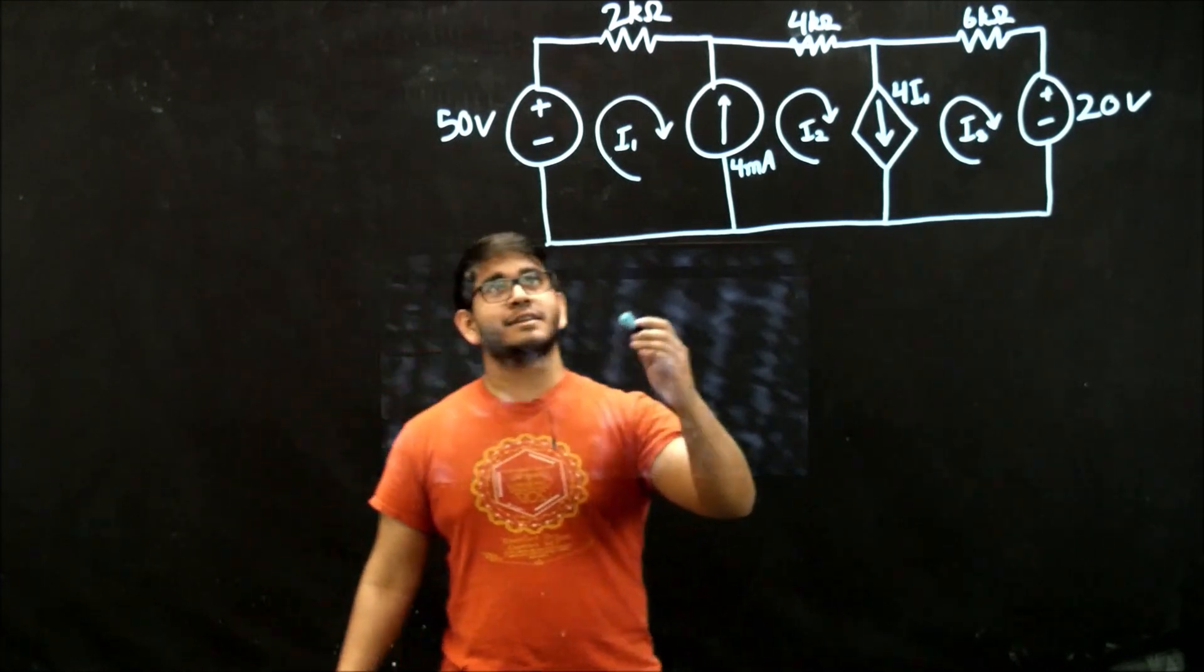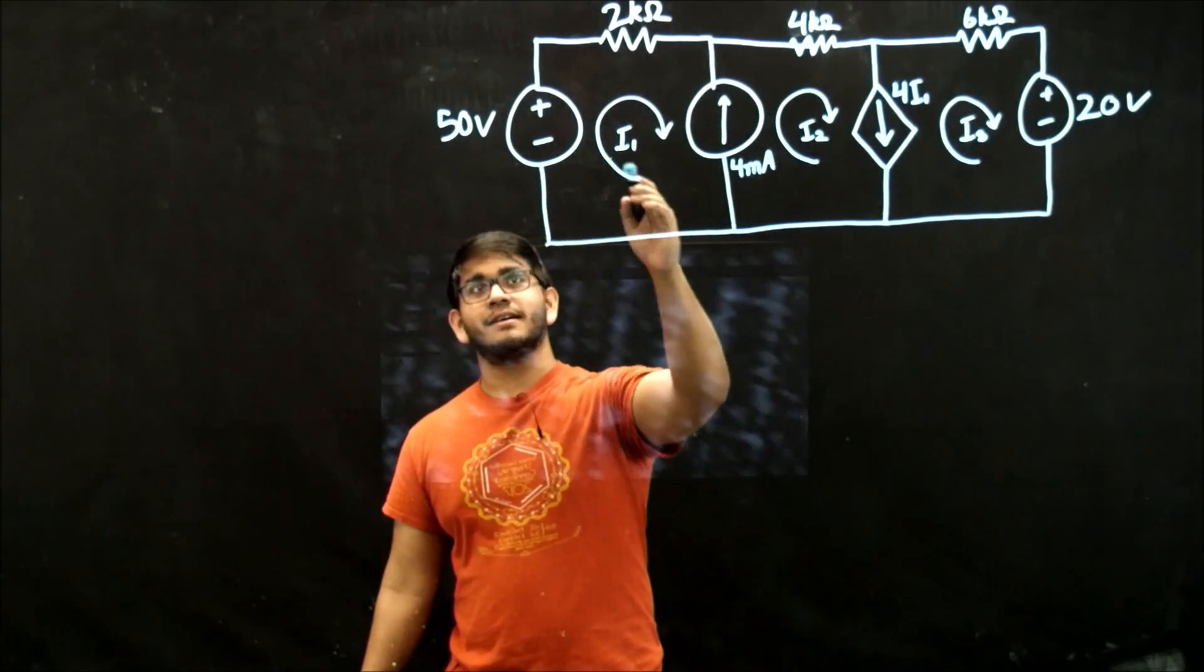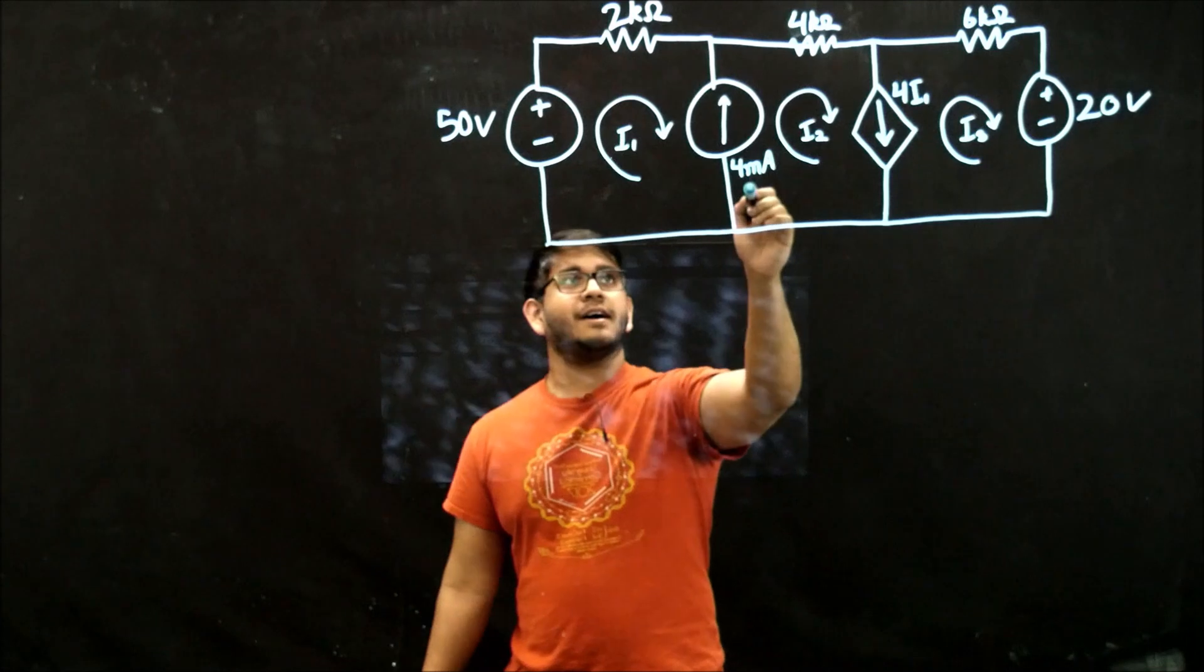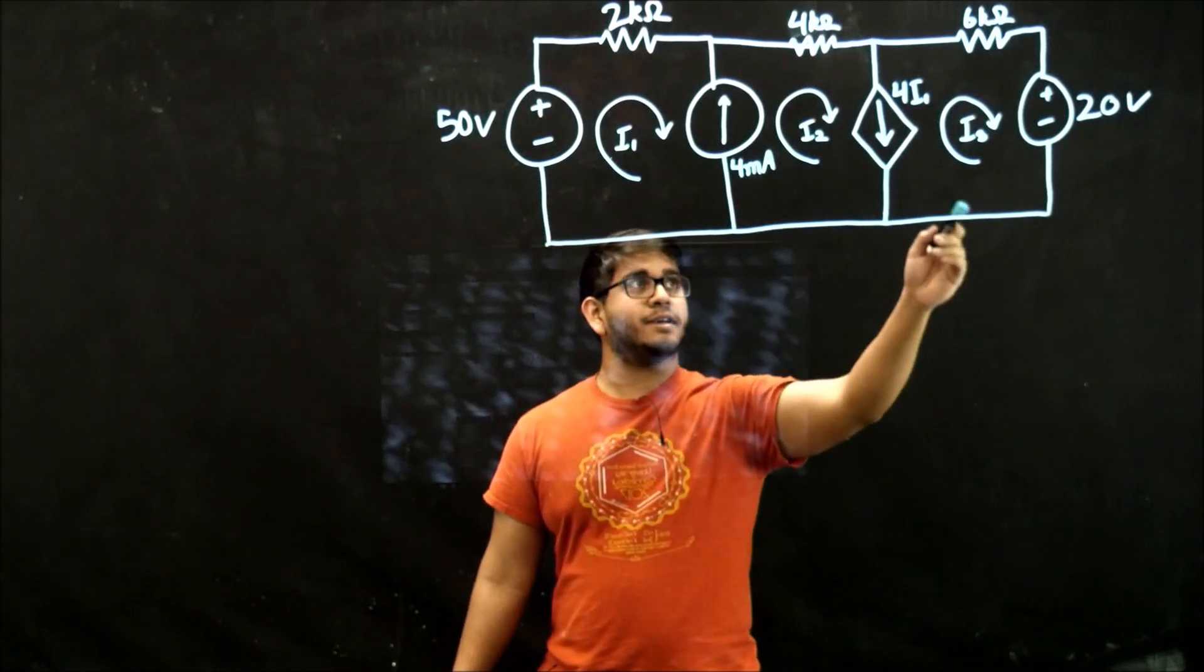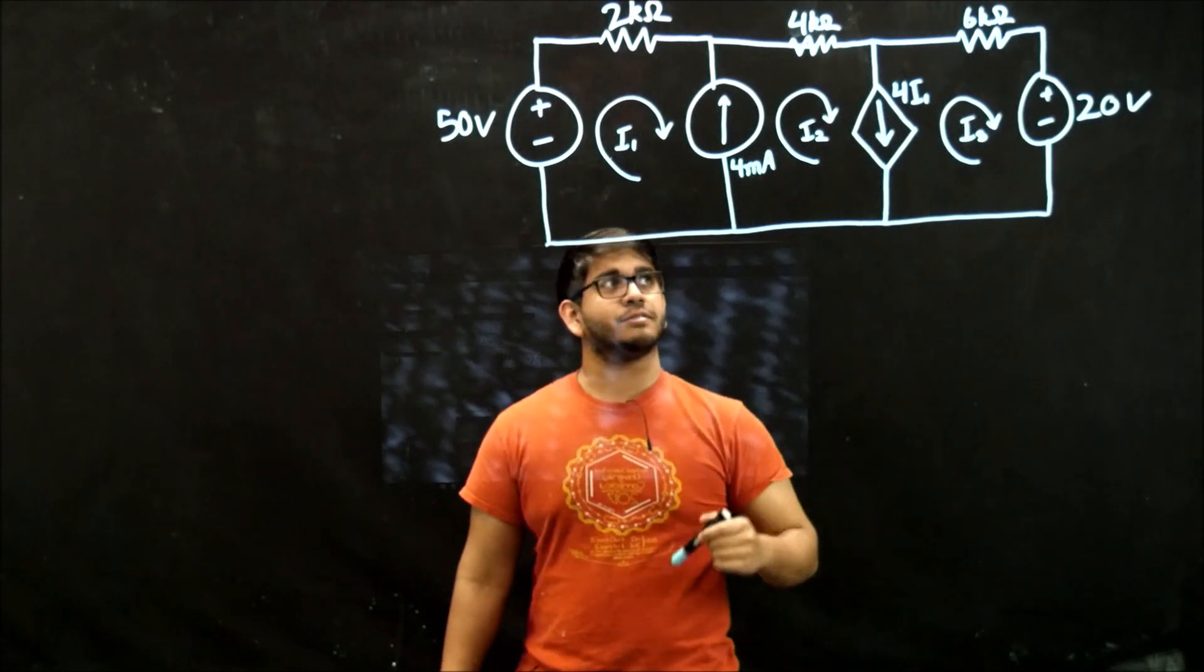So here we've got the circuit. As you can see, it has a couple of independent current and voltage sources as well as a dependent current source.